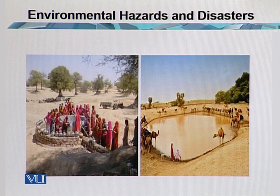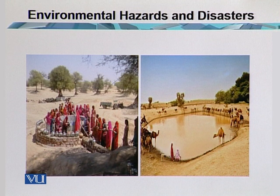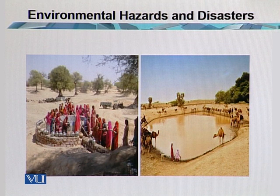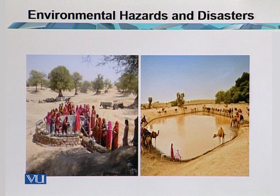In Pakistan, 40% of the total area is covered with plains and deserts, and deserts account for 9 to 10% of the total area of Pakistan. These include the Cholistan, Thal, and Tharparker areas. The main problem and issue of the desert-type climate is water — drinkable water is very important, and it affects not only human life but also animal life.